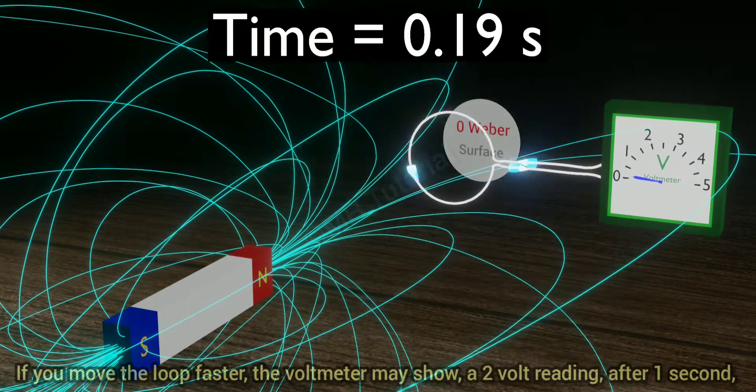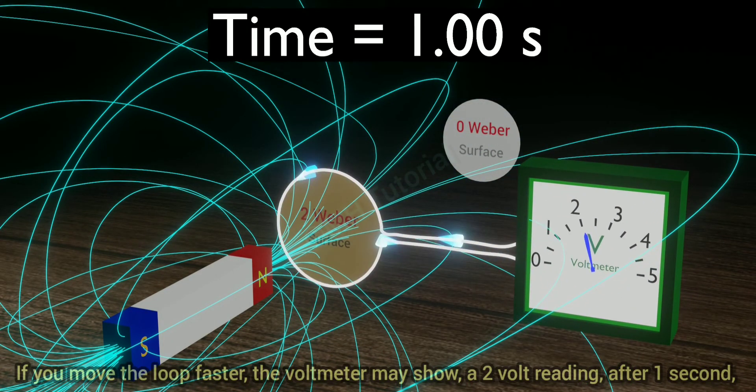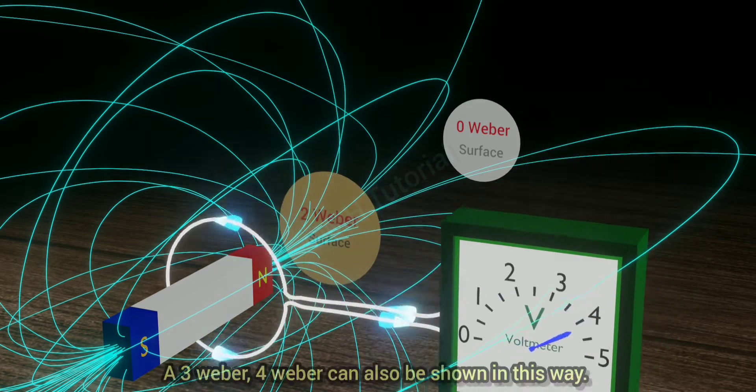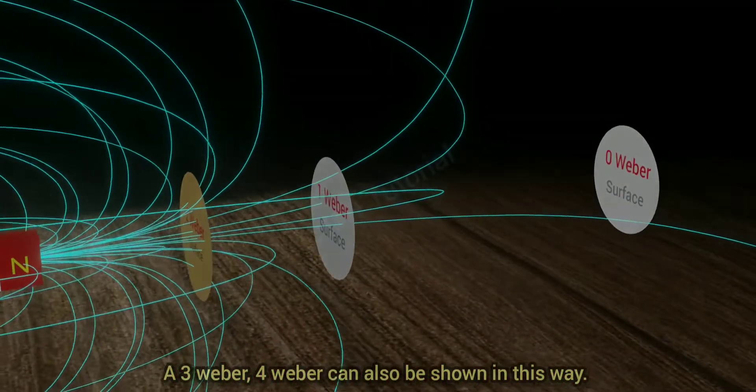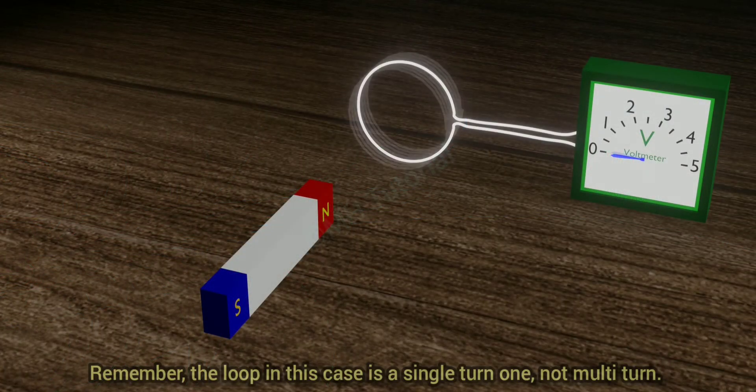If you move the loop faster the voltmeter may show a two volt reading after one second. Then the magnetic flux through that surface is two Weber. A three Weber, four Weber can also be shown in this way. Remember, the loop in this case is a single turn one, not multi-turn.